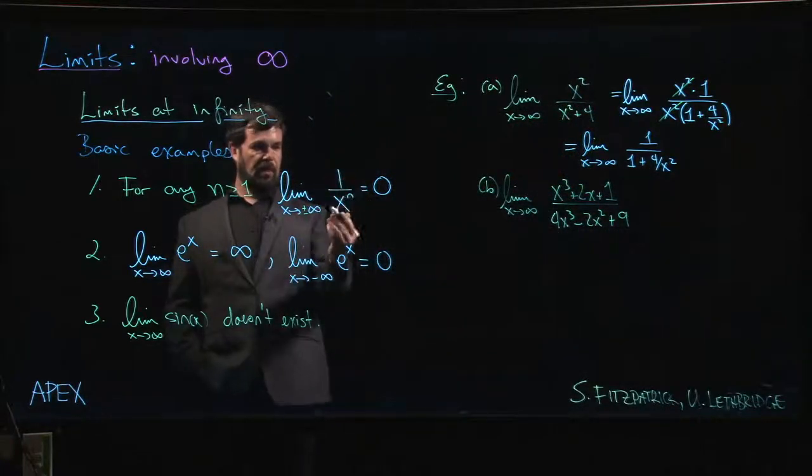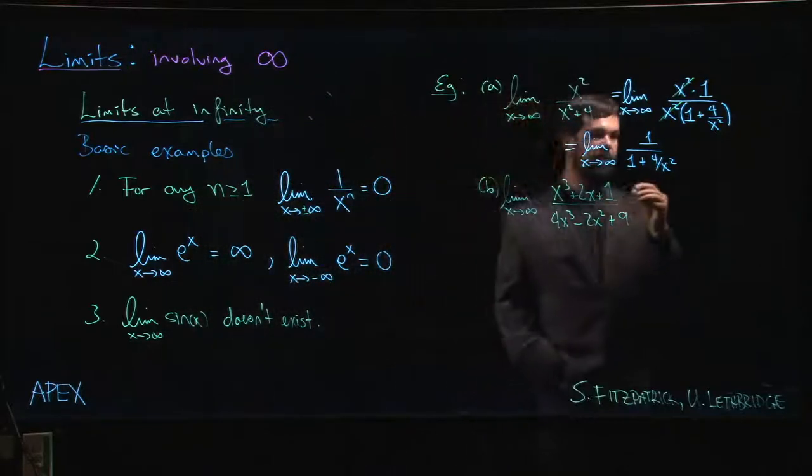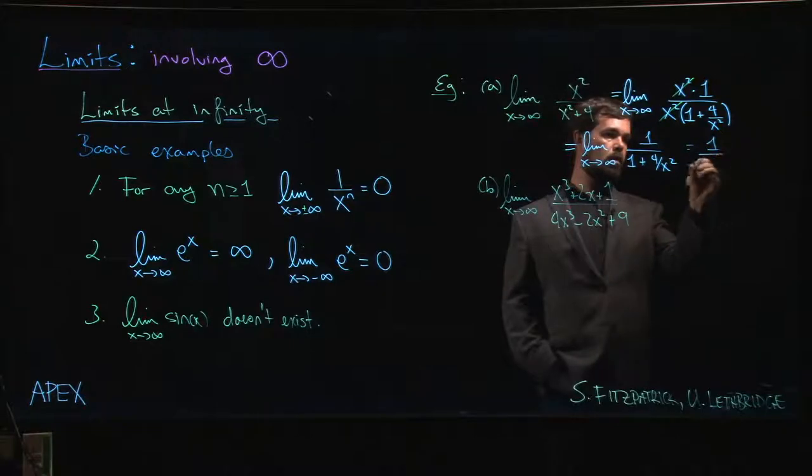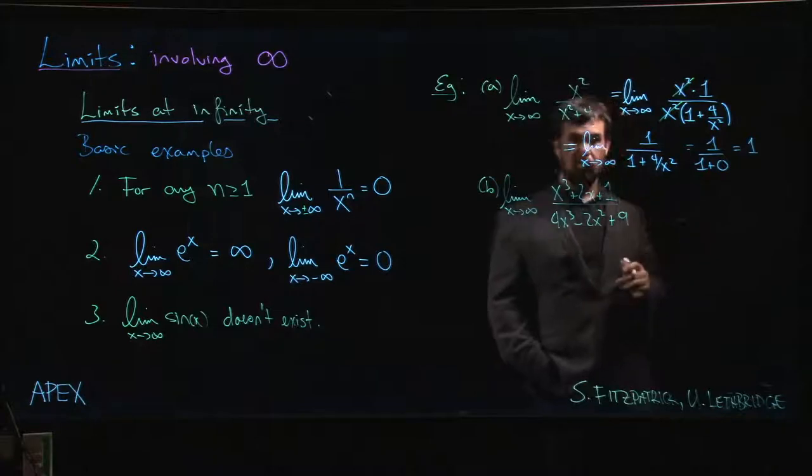Four is a constant, right? Any constant over a positive power of x, that limit is going to go to zero. So now I know that the limit is going to be one over one plus zero, and so as we expected we get a limit of one.